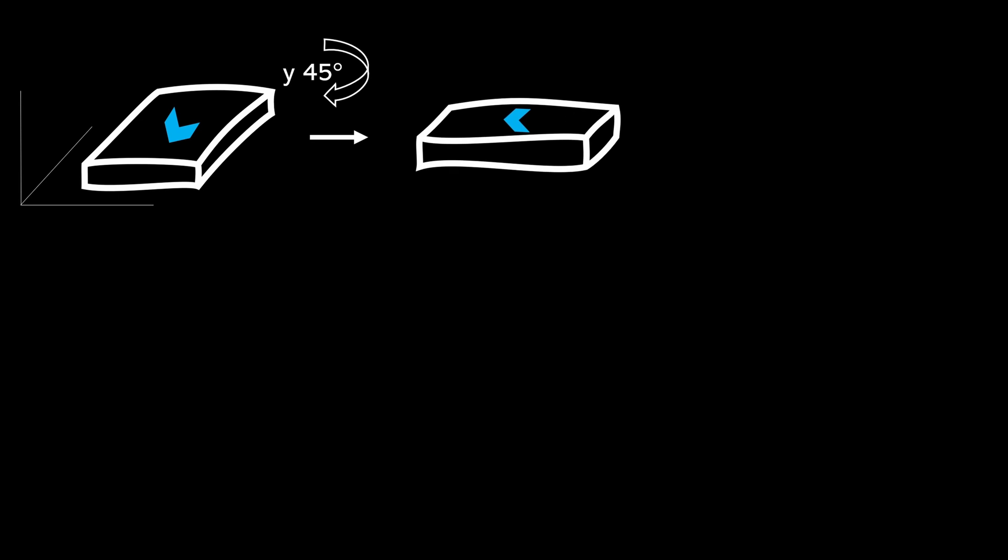Let's say we have this little box with a blue arrow that points into our direction. On the left we see the coordinate system with three dimensions. Now we perform a 45 degree rotation on the Y axis, which makes the blue arrow point to the left. After that we perform a 180 degree rotation on the Z axis. The blue arrow is now on the bottom of the box and points to the right.